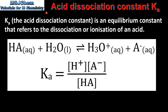Next we look at the acid dissociation constant. Ka, which is the acid dissociation constant, is an equilibrium constant that refers to the dissociation or ionization of an acid. In this reaction, HA, which is a weak acid, reacts with water forming the hydronium ion and the conjugate base of the weak acid. Here we have the expression for the acid dissociation constant. In the numerator we have the concentration of the hydronium ion, which can also be written as H+, and the concentration of the conjugate base of the weak acid. In the denominator we have the concentration of the weak acid.